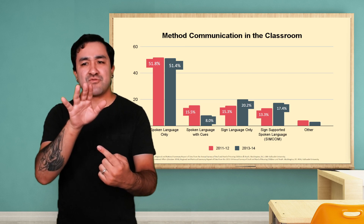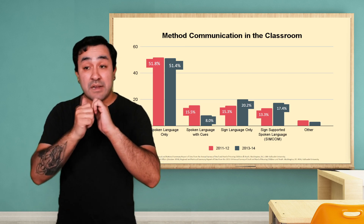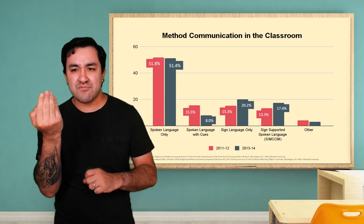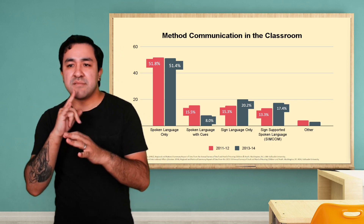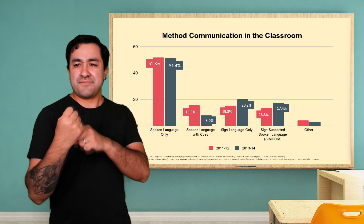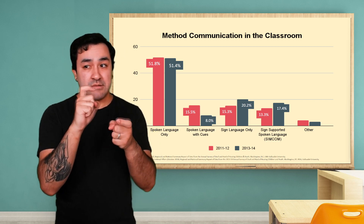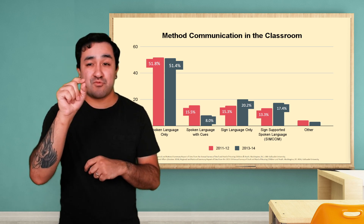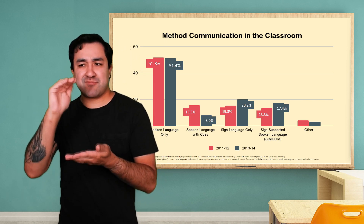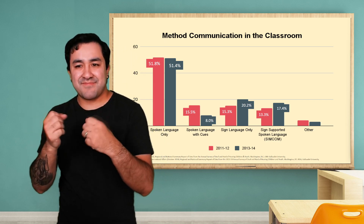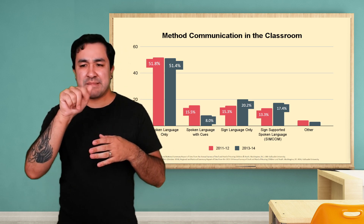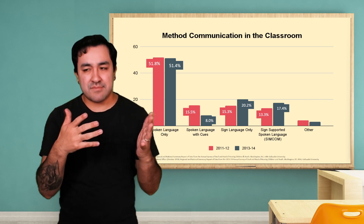This second graph displays communication methods in the classroom. Unlike the previous chart, there have been some changes between the two collection years. From 2011 to 2014, most students were in educational environments where spoken language was used with or without cues. However, from 2013 to 2014, there was a decrease in the use of spoken language with cues and an increase in ASL.